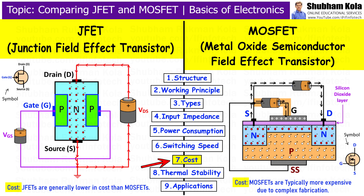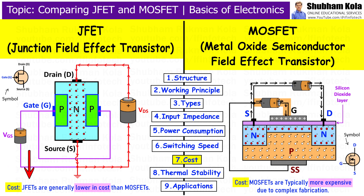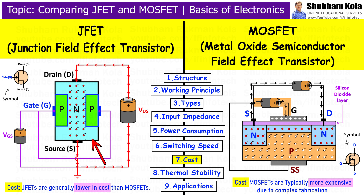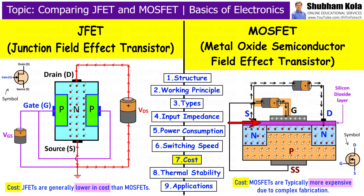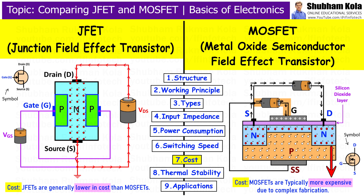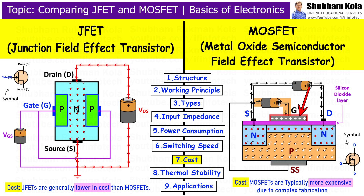Next is cost. JFETs are typically cheaper and simpler to manufacture compared to MOSFETs. The manufacturing process for JFETs is simpler because it does not require the oxide insulator layer that is needed for MOSFETs. On the other hand, MOSFETs are slightly more expensive due to the additional complexity of the insulated gate and the need for precise manufacturing.